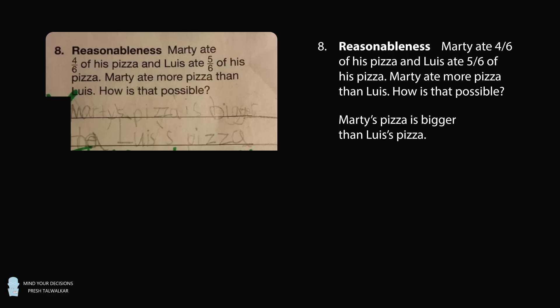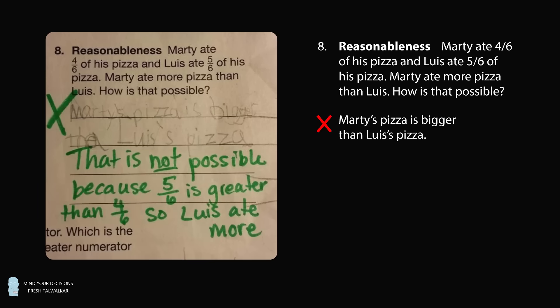So there should be no controversy. This is definitely a reasonable answer. But the controversy started because the teacher marked this reply as wrong. The teacher even then wrote, that is NOT possible because 5 over 6 is greater than 4 over 6, so Luis ate more.